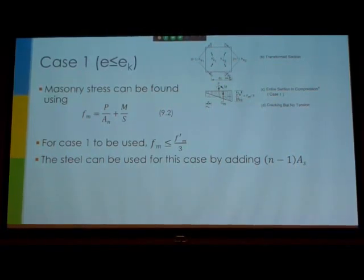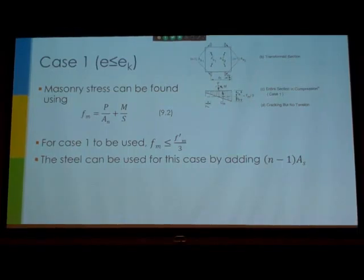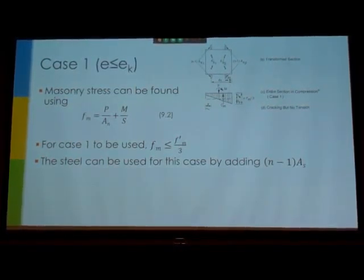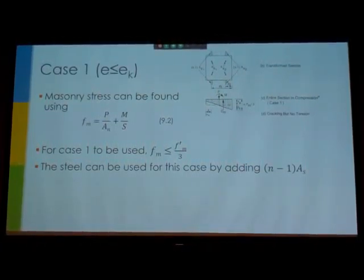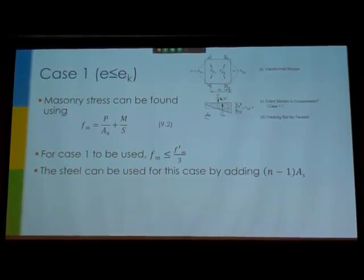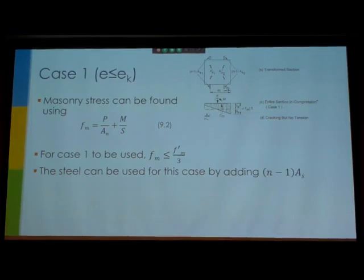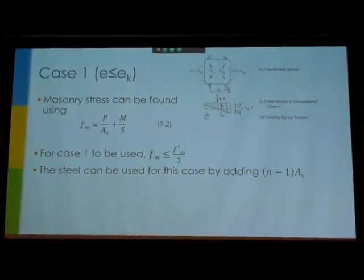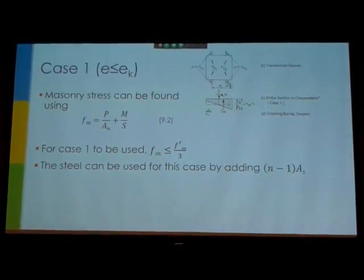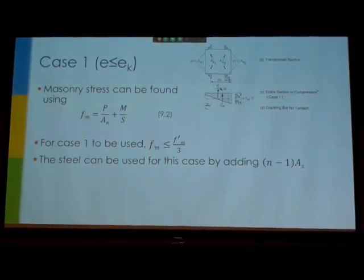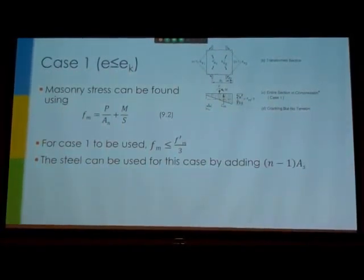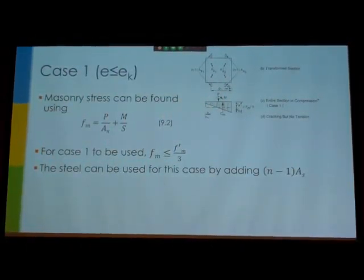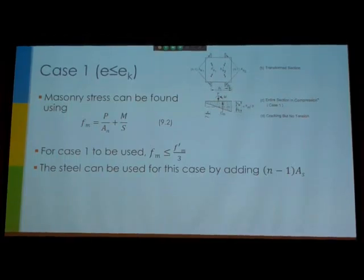I might interject there. You took this from Drysdale. That one-third may now be 0.45 F'm. You might check that, I think that was based on the older code. Okay, I'll check on that. And then you also can use the steel to add to your compression strength using your n minus one times your steel to get you a little more compression strength.